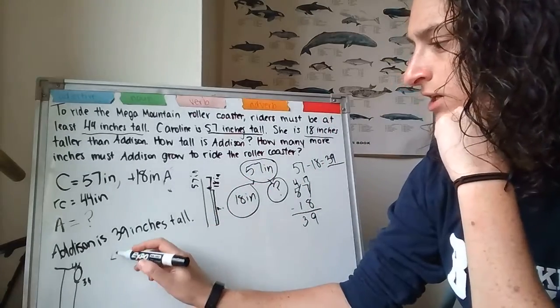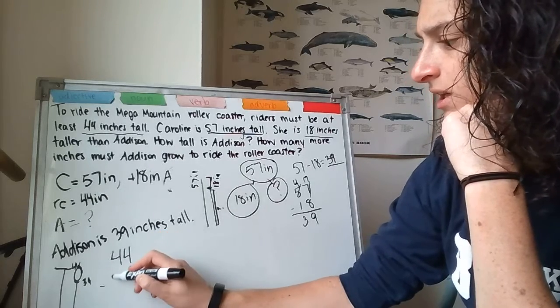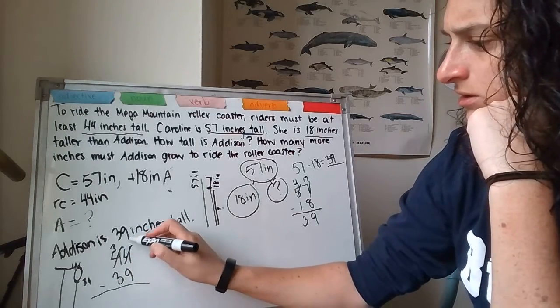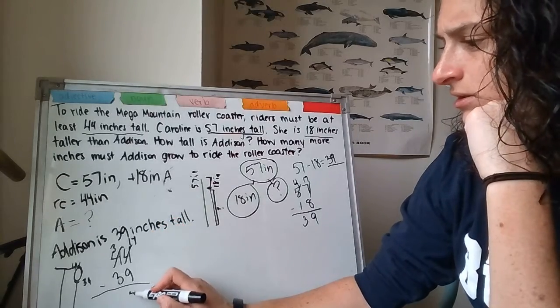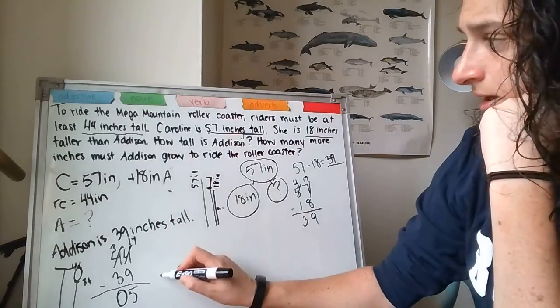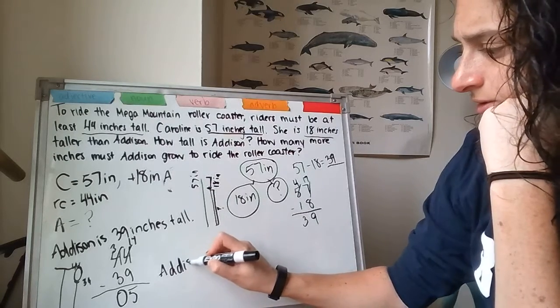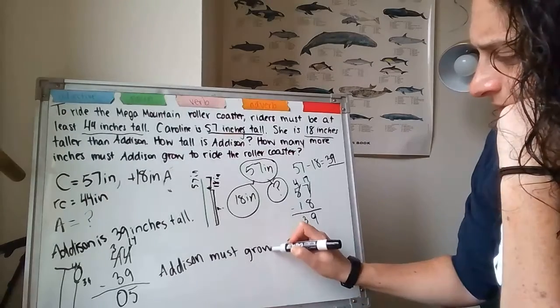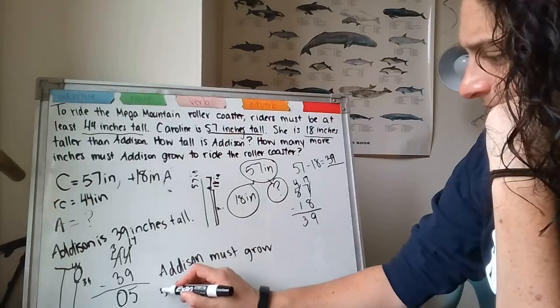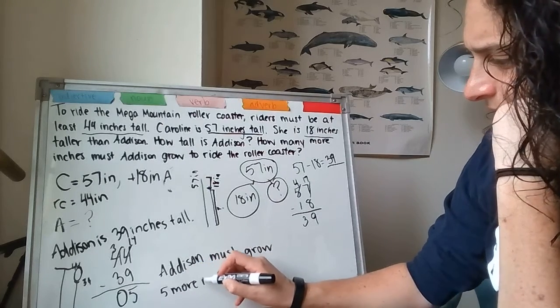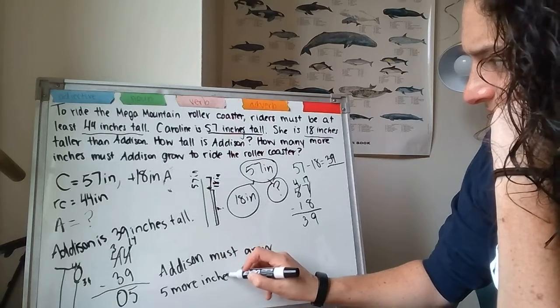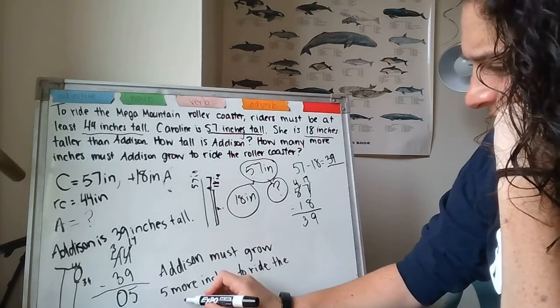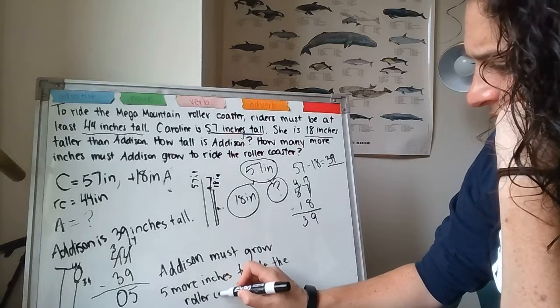I'm going to do some subtraction. I'm going to say 44 inches minus 39 inches equals Addison must grow 5 more inches to ride the roller coaster.